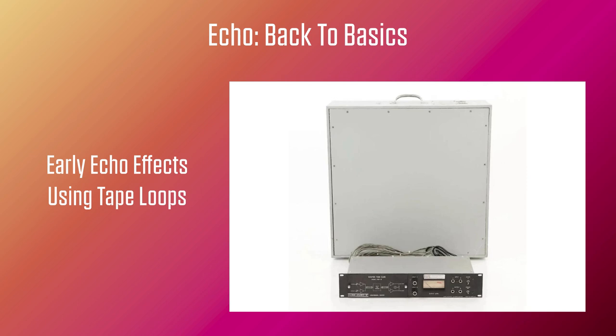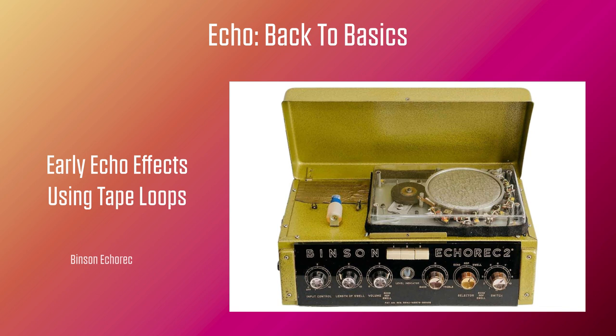Perhaps the most successful early non-tape unit was the Binson Echorec, which used a rotating drum and multiple replay heads instead of tape. The edge of the drum was wound with a special wire to provide a recording surface. By switching the various playback heads on or off, multi-head machines like this can produce different rhythmic repeat patterns, though on this particular model the drum speed couldn't be changed. Here's what it sounded like.